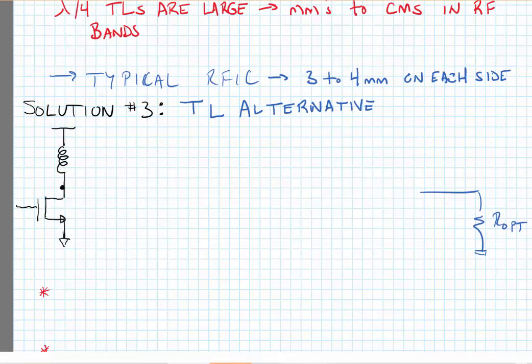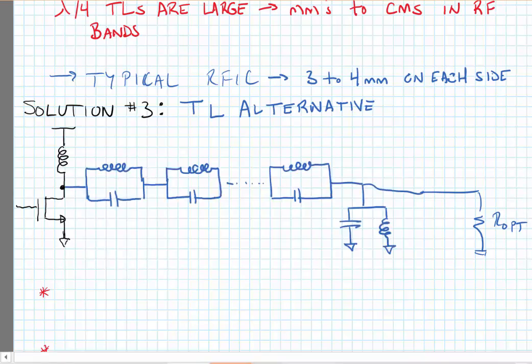Here, what we're going to do is cascade a series of resonant circuits. Now each of the resonant tanks that we've drawn here in series from the drain to the output is resonant at an odd harmonic.